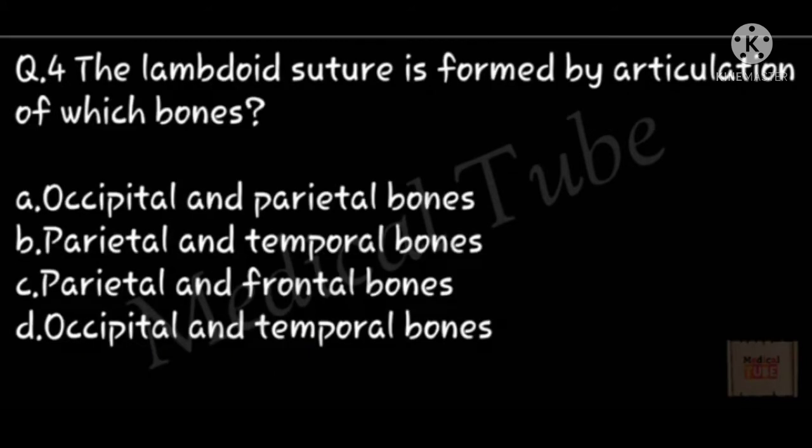Fourth number question: the lambdoid suture is formed by articulation of which bones? Correct answer is A, occipital and parietal bones.